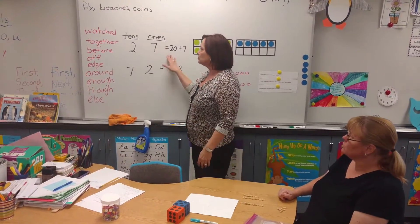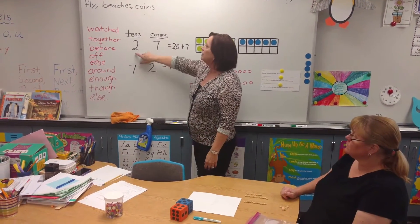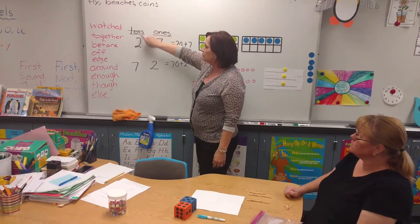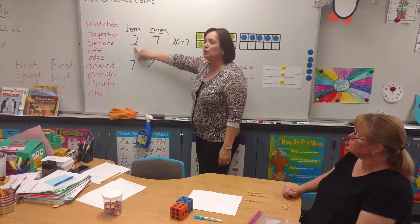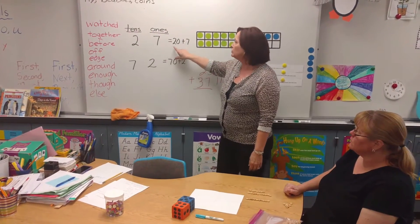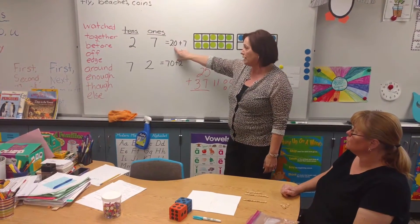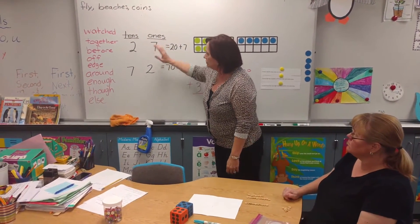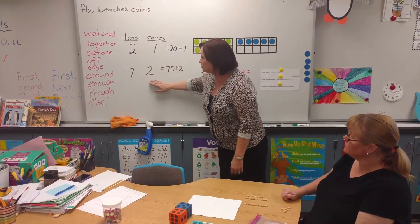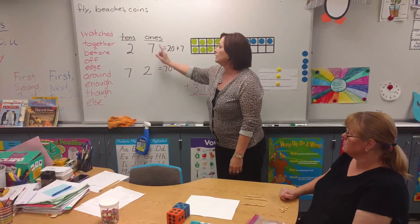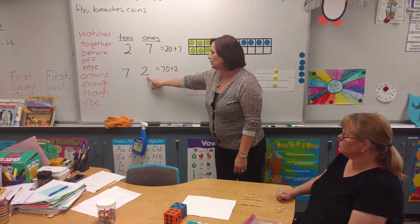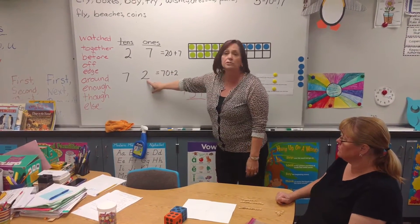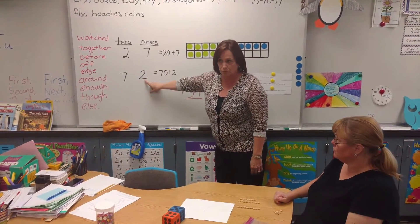For example, in the number 27, the tens place has a 2. That 2 is worth 20. In the number 72, in the ones place, we have a 2, and that's worth 2.